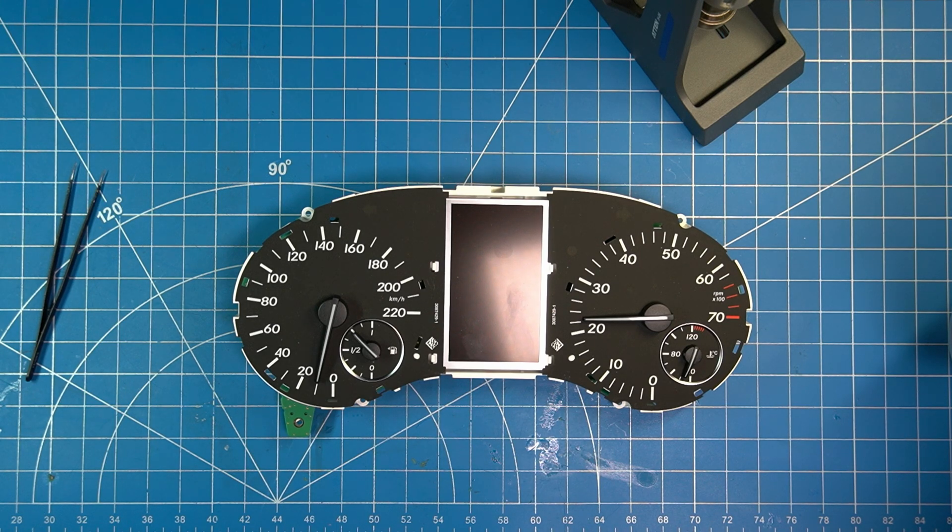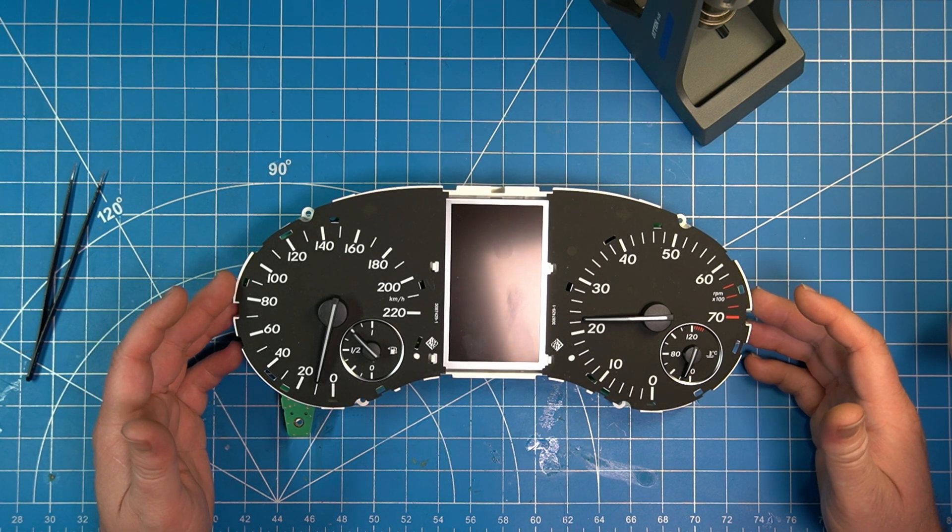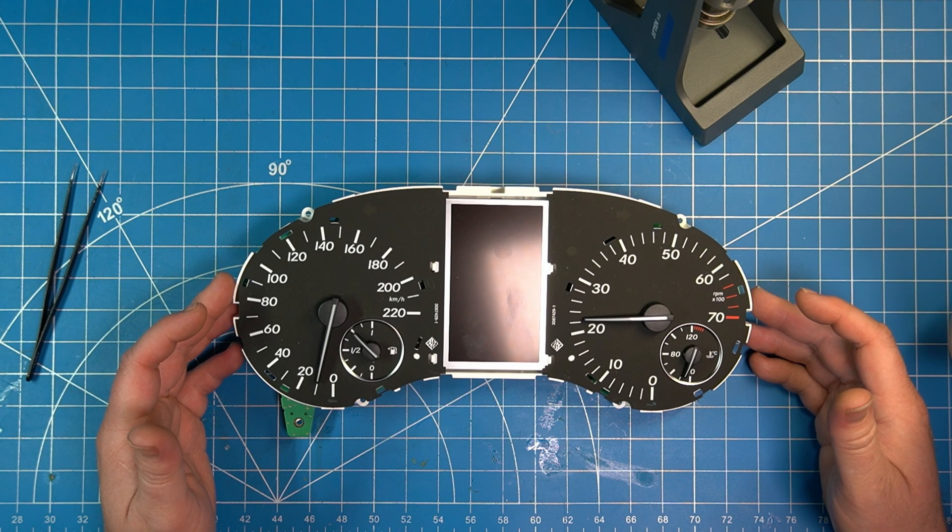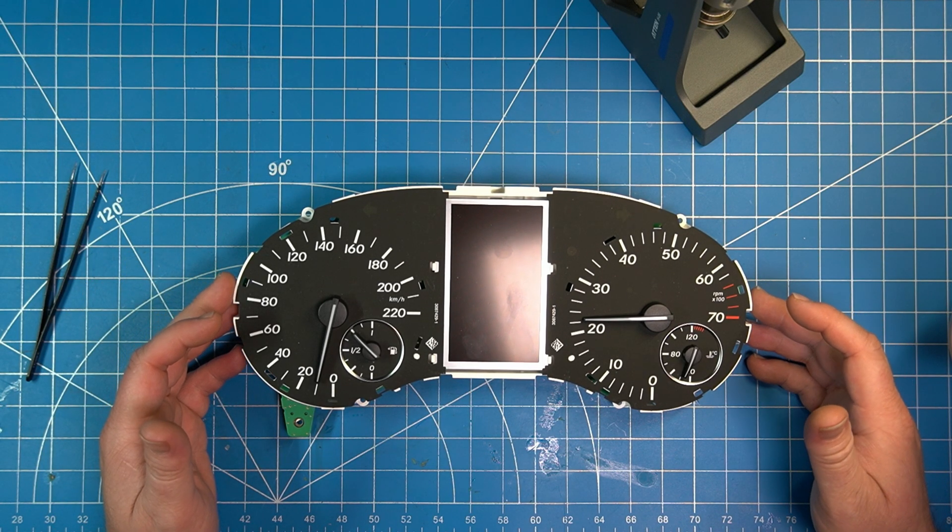Hey everyone, welcome back to The Bench. Today we have a Mercedes gauge cluster for the W447, which is the Mercedes Metris van, also known as the Vito in the rest of the world.